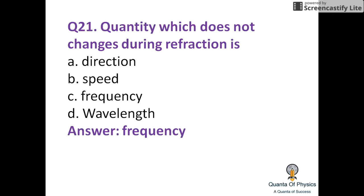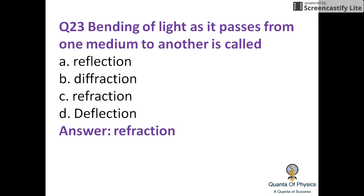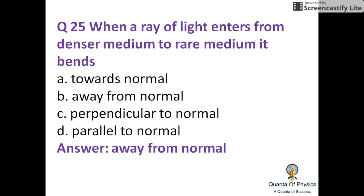The quantity which does not change during refraction is frequency. Frequency never changes during refraction. The angle of incidence that causes the refracted ray to bend through 90 degrees is called the critical angle, and beyond this angle total internal reflection occurs. Bending of light as it passes from one medium to another is called refraction.